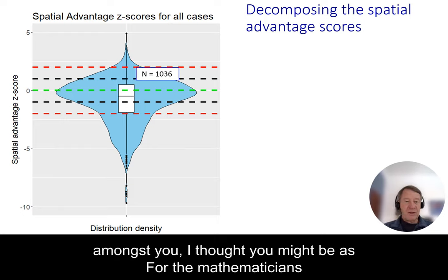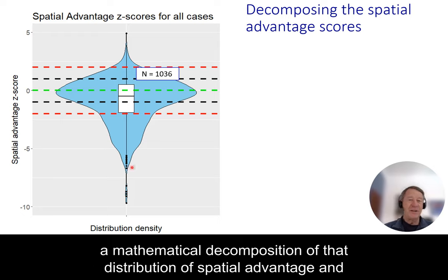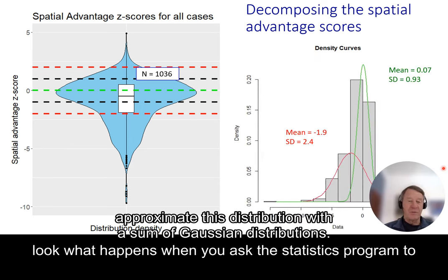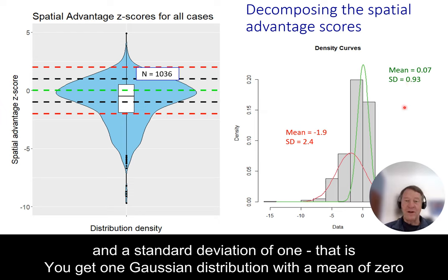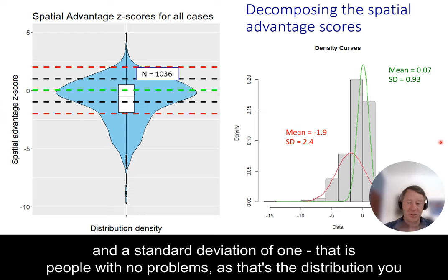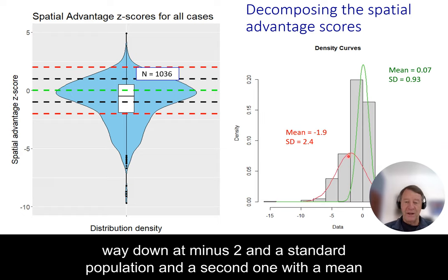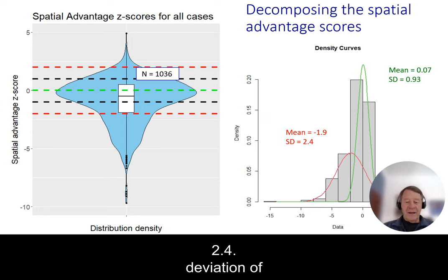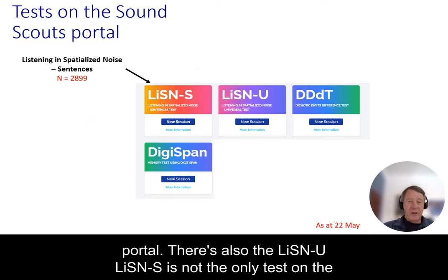For the mathematicians amongst you, we can do a mathematical decomposition of that distribution of spatial advantage. When you ask it to fit two Gaussians that best approximate the distribution, you get one Gaussian with a mean of zero and a standard deviation of one — people with no problems, as expected of the typically developing population — and a second one with a mean way down at minus two and a standard deviation of 2.4. Curious maths.